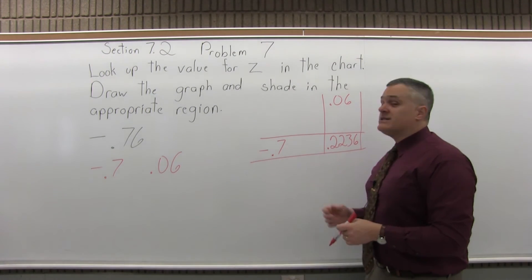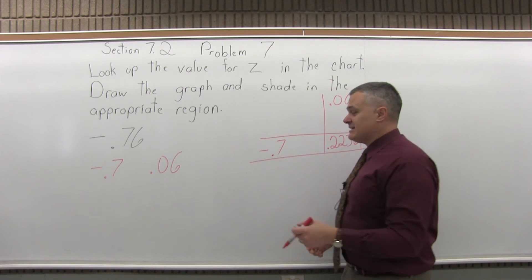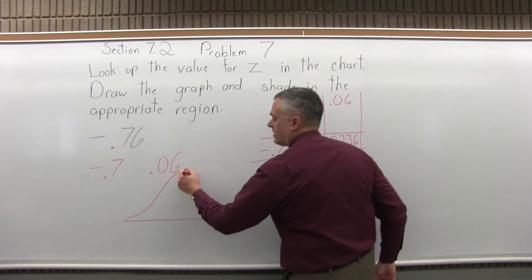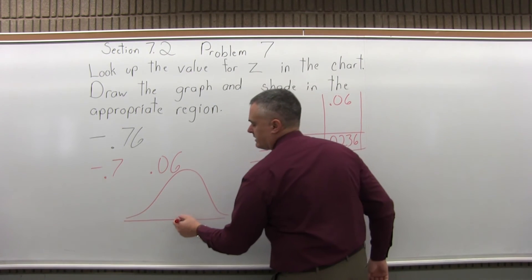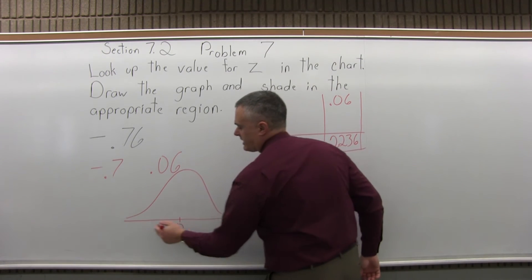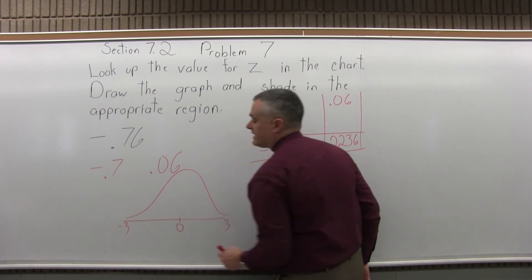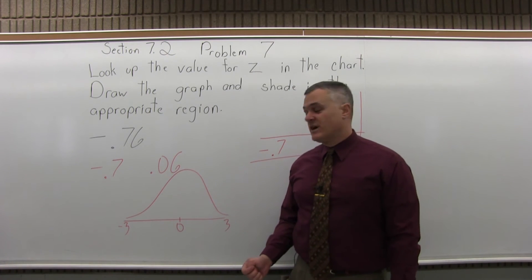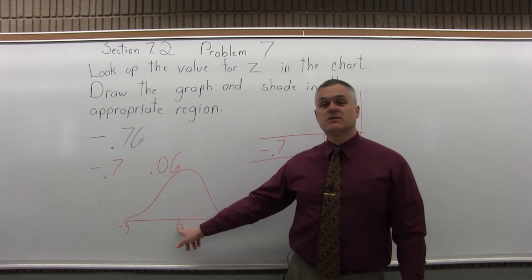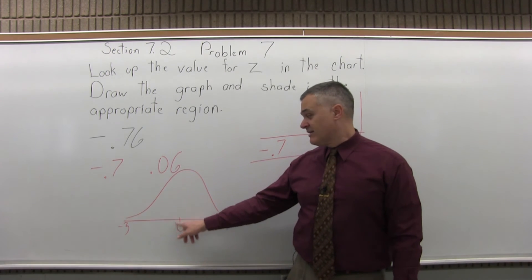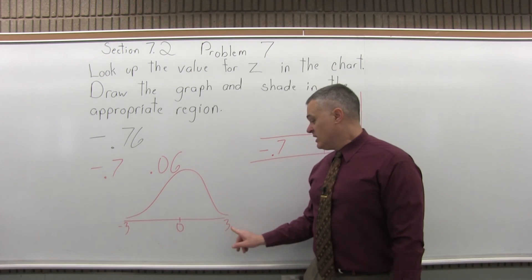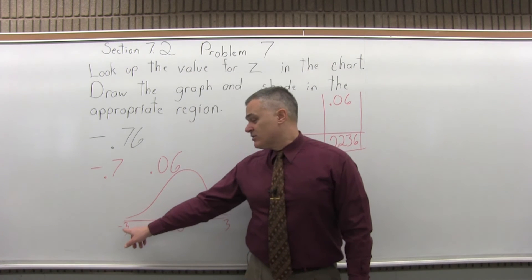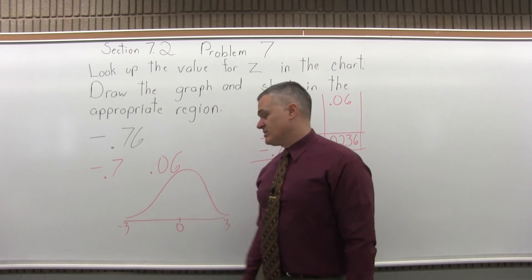Now, it's also important to understand what that .2236 means. So if you look at the bell curve, we'll put a zero in the middle, three on the right end, negative three on the left end. And these numbers under the bell curve represent how many standard deviations you are away from the average value. The zero in the middle means you have zero standard deviations away from the average value, because the average is right in the middle for the bell curve. Three on the right means three standard deviations larger than the average value. Negative three means you have three standard deviations less than the average value.